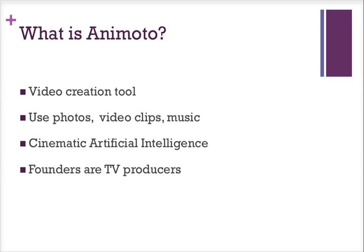The really cool thing about Animoto is it uses something called cinematic artificial intelligence, which means it times the photos and videos with the music. You use templates created by Animoto and just drop in the items you want to include.